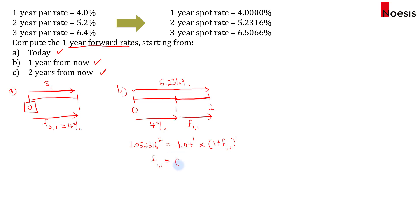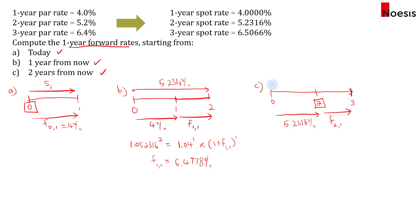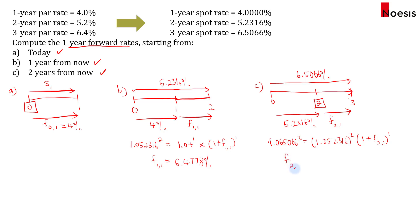For the one-year forward rate starting two years from now — covering year two to year three — we need the two-year spot rate of 5.2316% and the three-year spot rate of 6.5066%. Compounding 6.5066% for three years should equal the compounded value of 5.2316% for two years, multiplied by one plus the forward rate for one more year. Solving, the one-year forward rate starting two years from now is 9.1031%.